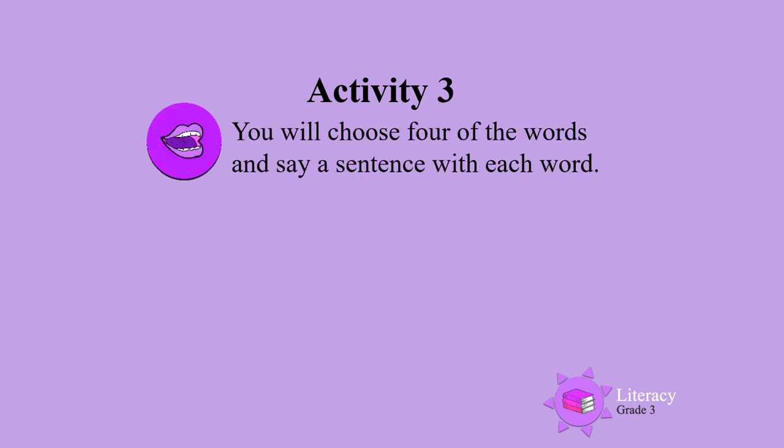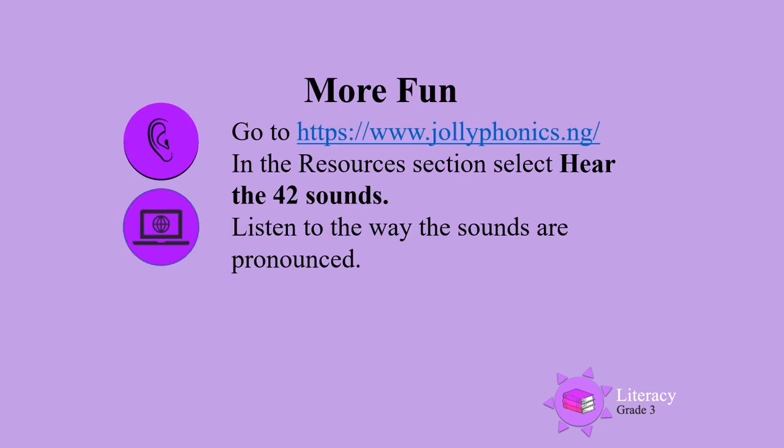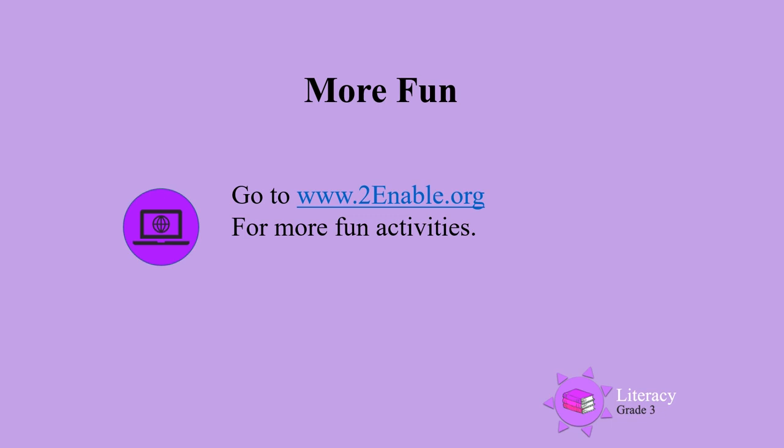Activity 3: You will choose four of the words and say a sentence with each word. For more fun, go to the Jolly Phonics website and in the resources section, select 'Hear the 42 sounds' — then you can listen to the way that the sounds are pronounced. You can also go to www.toenable.org for more fun activities. Peace.